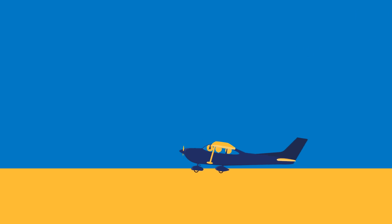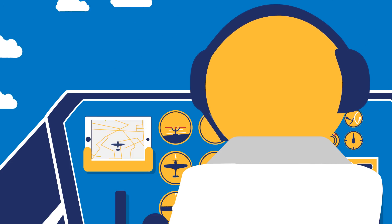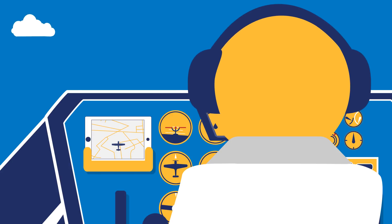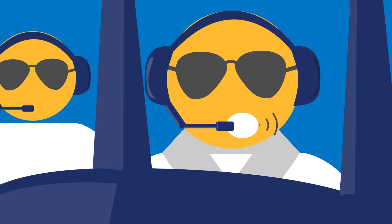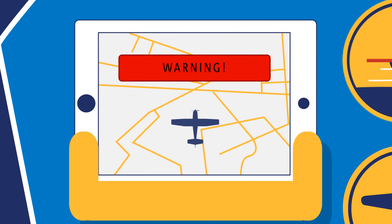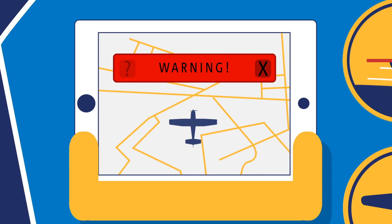Once in the air, follow your plan but be ready to deviate from it or change it in case of unforeseen or exceptional circumstances, like weather, requests from air traffic control, or emergencies, for example. Your navigation app can also provide you with unforeseen specific warnings during the flight.